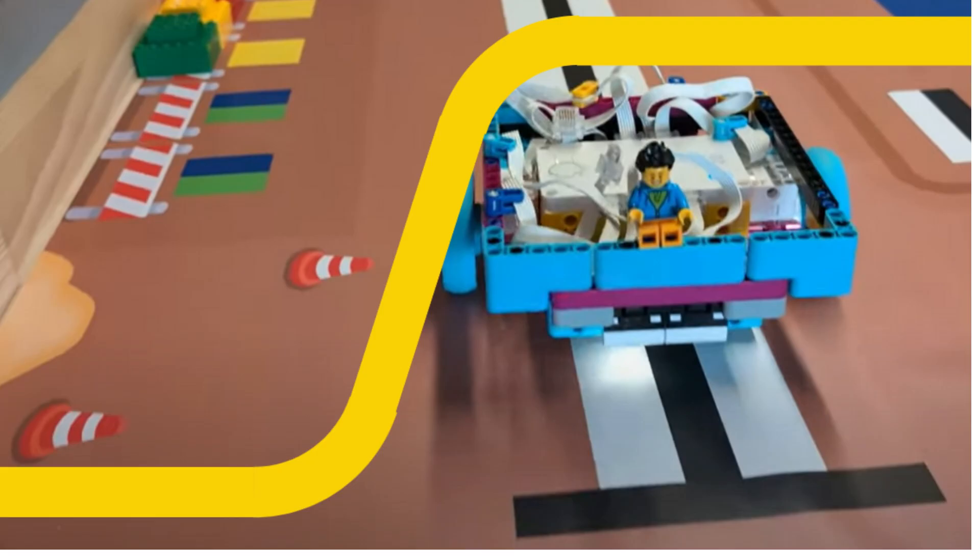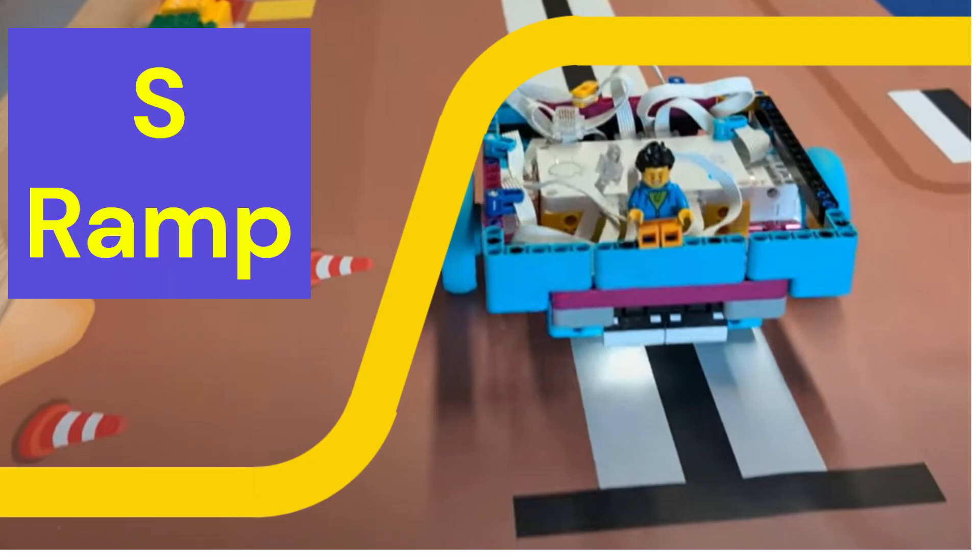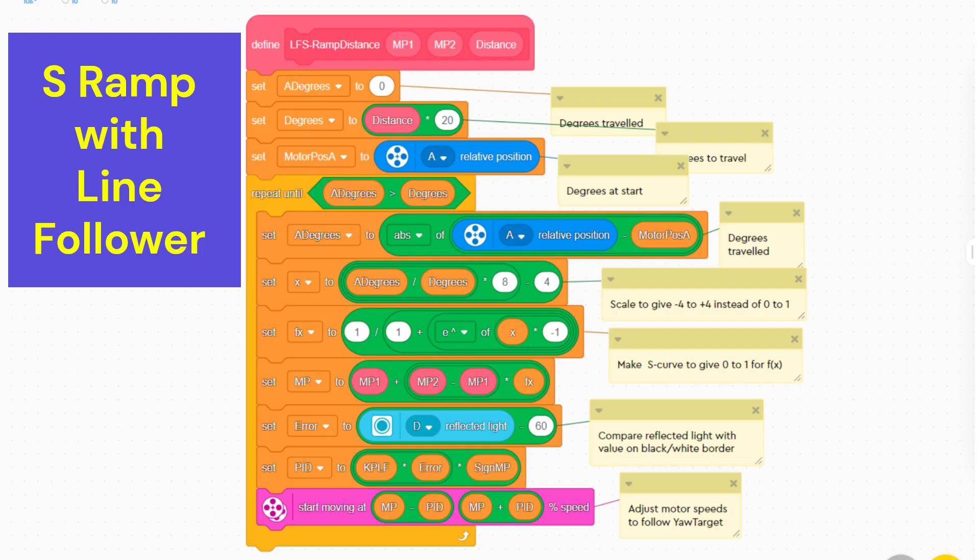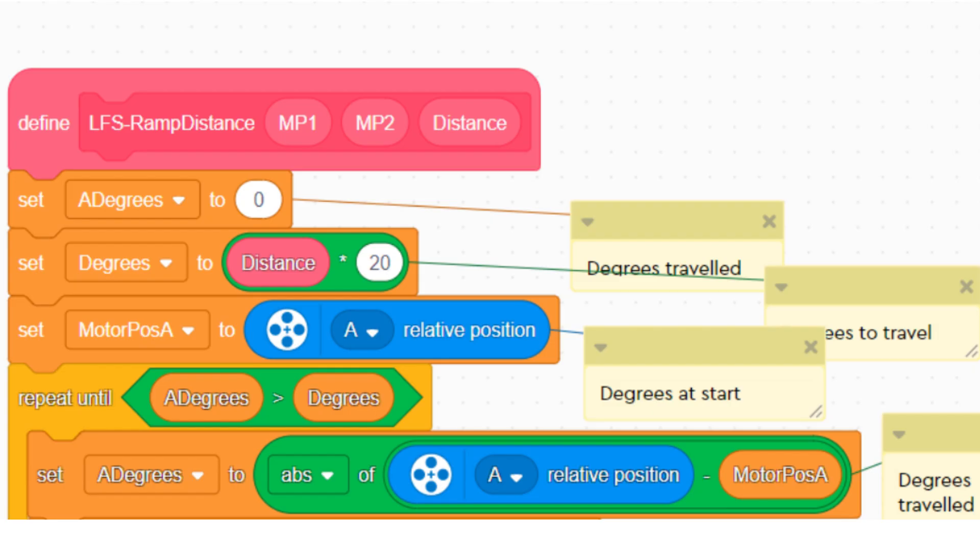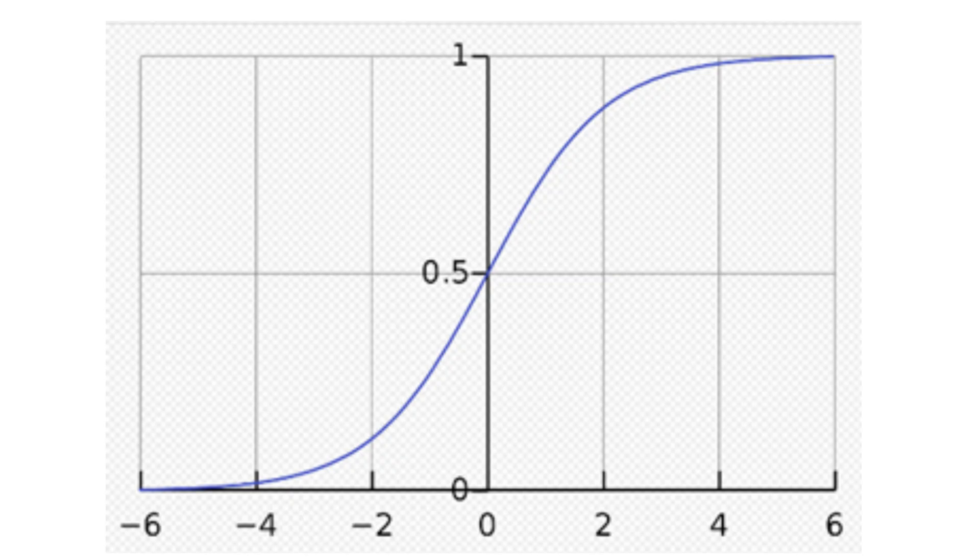Now we will look at an S ramp and use it with a line follower. Of course, all three ramp types can be used with a yaw or line follower or a simple move block. Here we see the my block for the S ramp and line follower using light sensor D. We measure the distance travelled as for the distance-based ramp. And then we use the S ramp function.